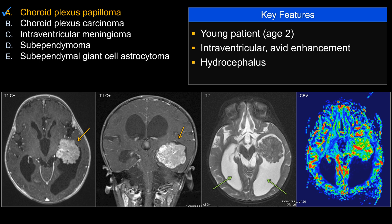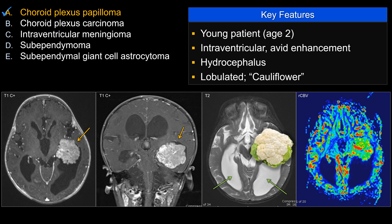The perfusion-weighted sequence doesn't really help you when it comes to differential diagnosis between papilloma versus carcinoma, although some textbooks would suggest carcinoma has higher perfusion. This is described as a lobulated or cauliflower-like appearance.